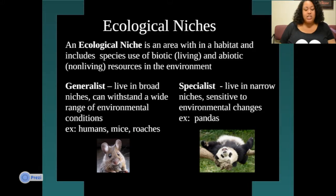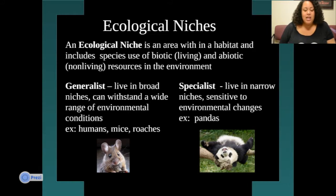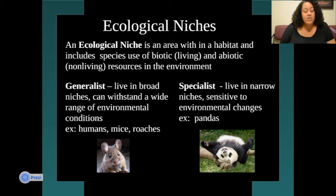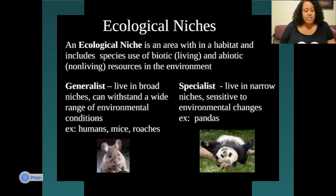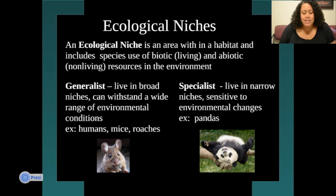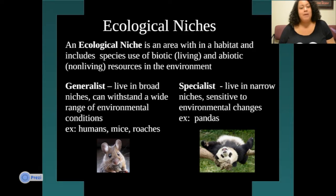Ecological niches are areas within a habitat that include both living and non-living species, and they use the resources of the environment. Generalist species can live in broad niches and thrive within a large range of environmental conditions — like humans, mice, and roaches. Specialists live in narrow niches and are sensitive to environmental changes, like pandas. That's why specialist species are usually the endangered species.